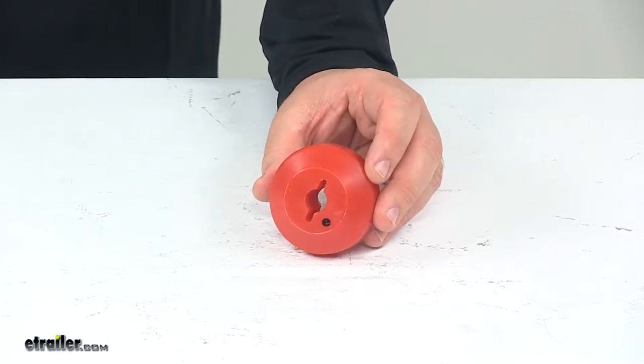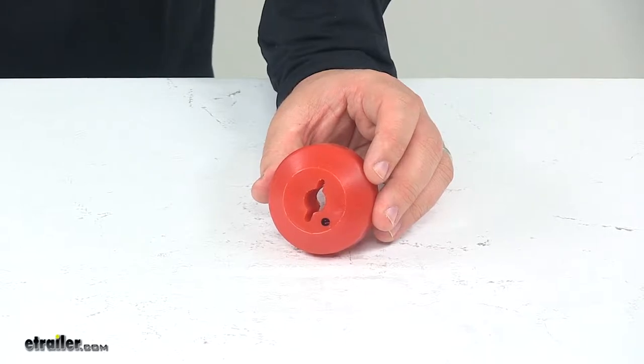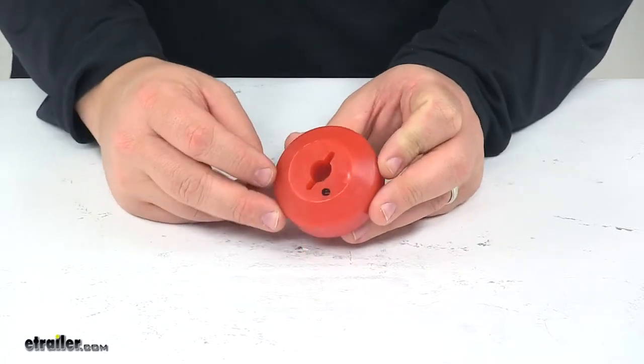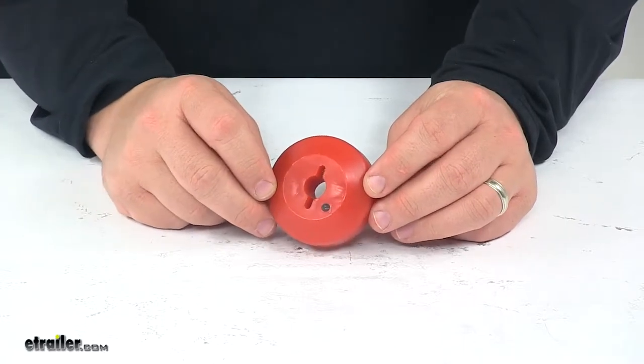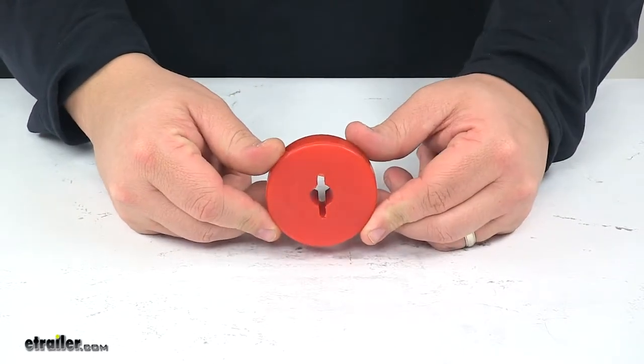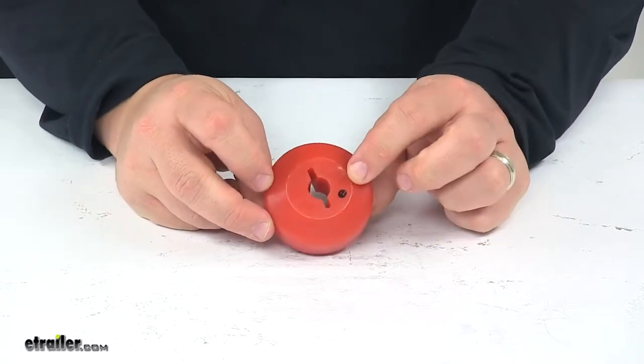Today we're taking a look at the Bulldog Winch Cable Hook Stopper for winches. The cable stopper prevents damage and rattle that's caused by the rope hook hitting against the fair lead. This also stops the winch motor from pulling the cable in too far.